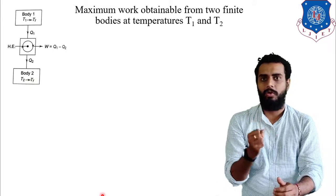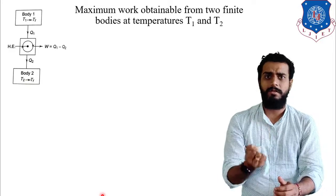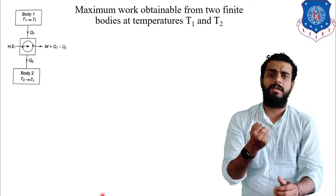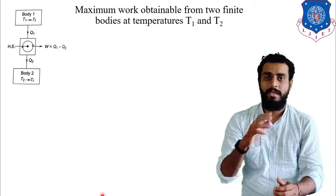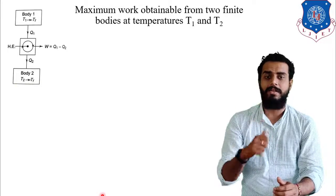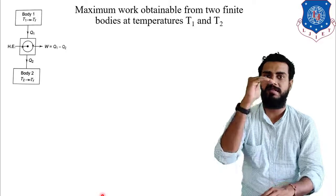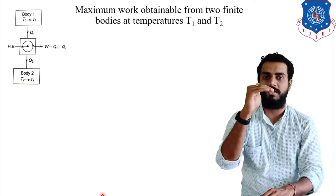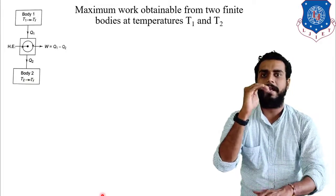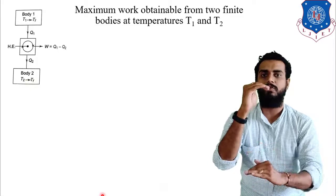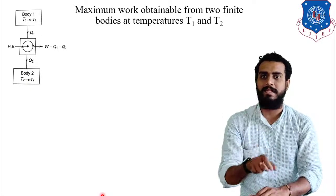The lower the Tf, the maximum work we can achieve from the bodies. Now we will use T1 as our source reservoir and T2 as our sink reservoir, and in between these two bodies we will operate a cyclic heat engine.